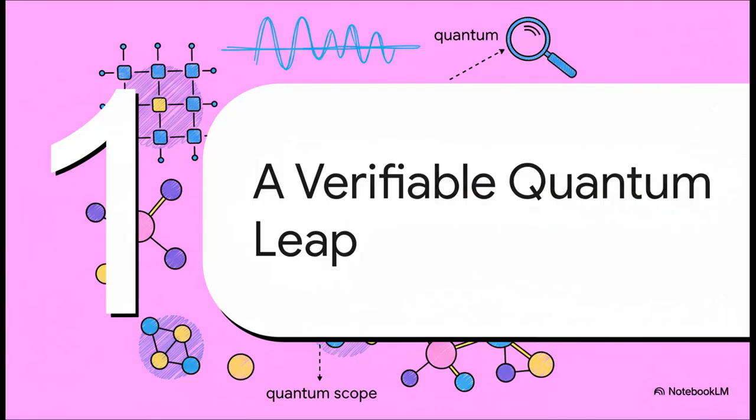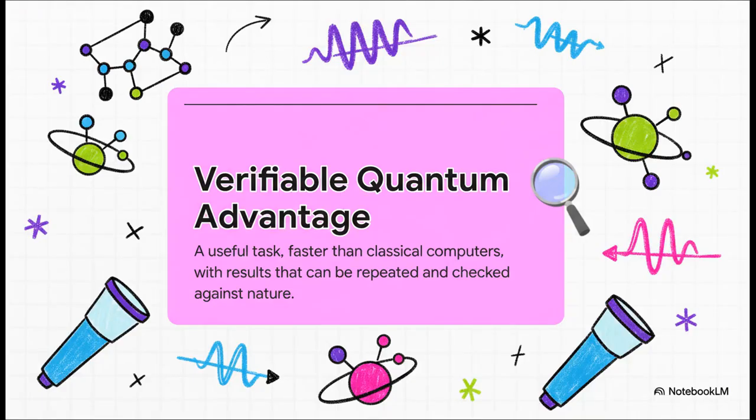To really get why this is such a game changer, we have to talk about something called verifiability. See, this isn't just about being fast. It's about being fast in a way that's reliable, useful, and this is the key part, can be double-checked against experiments in the real world.